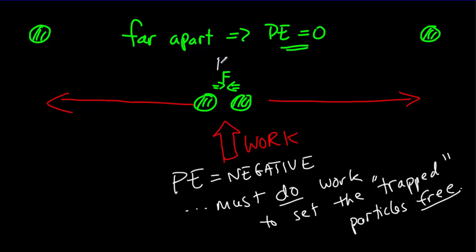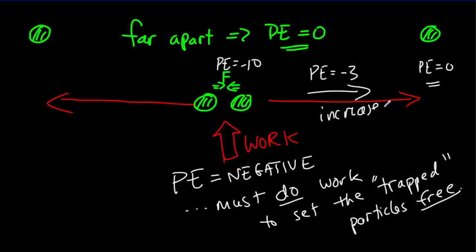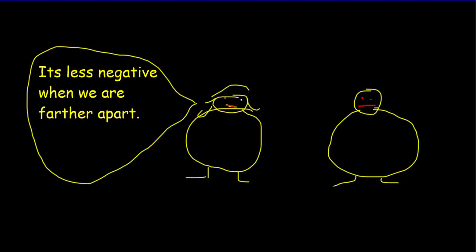Just making up some numbers: when they're really close, the potential energy might be minus 10. Move them apart and maybe it's negative 3. When totally separated, the potential energy is zero. So we're seeing an increase in potential energy because it's becoming less negative. I find this helpful to remember: potential energy increases and becomes less negative as particles move farther apart — kind of like an old couple that's been arguing for years. The more they're separated, the less negative the relationship is.